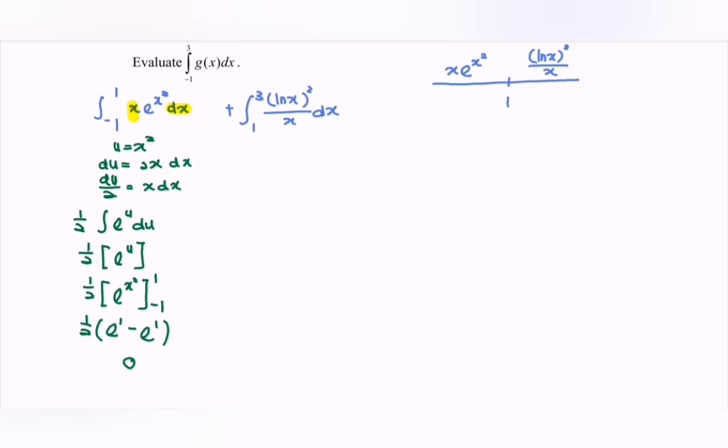Next, focus on the right hand side. Let u equal ln x. Differentiate u with respect to x, so we have 1 over x. Notice that we have 1 over x multiplied by dx. So here we have du. Substitute.